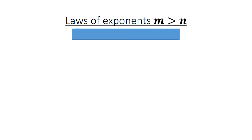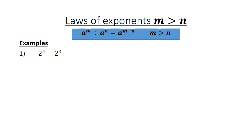Laws of exponents. Now we have m greater than n. a to the power of m divided by a to the power of n equals a to the power of m minus n. Example: 2 to the power of 4 divided by 2 to the power of 3 equals 2 to the power of 4 minus 3, which equals 2 to the power of 1, equals 2.